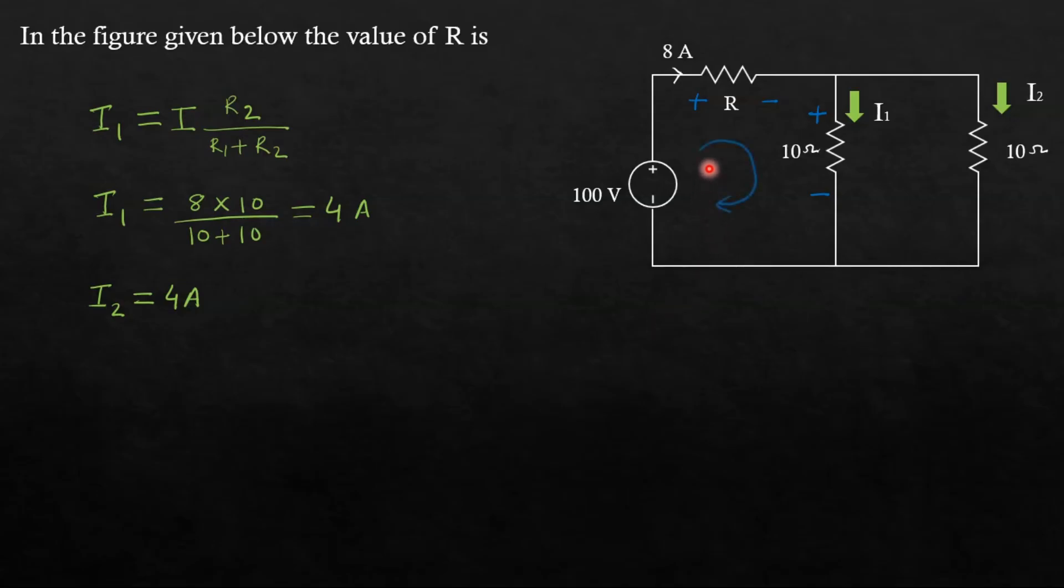Now let us apply KVL in this loop, starting from here. From minus to plus, that is plus 100. We are going from minus to plus, this is the case of rising, that is why plus 100. Here plus to minus, so the sign will be minus 8 times R. Similarly here, plus to minus, so the sign will be minus 10 times I1, equals 0, because sum of voltages in a closed loop equals 0.